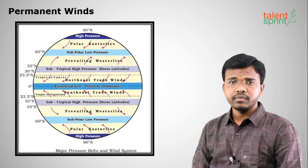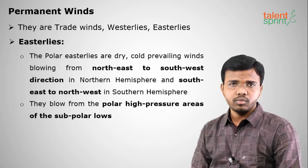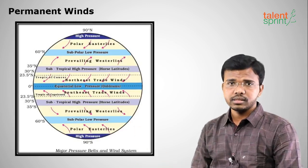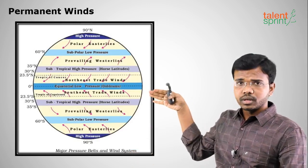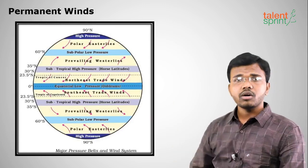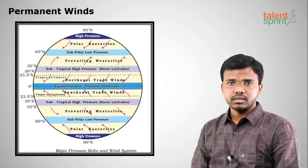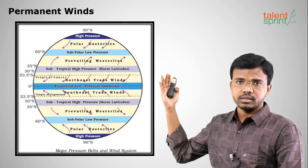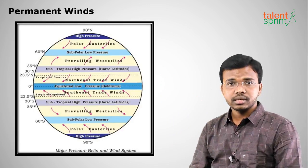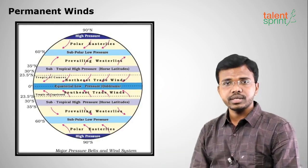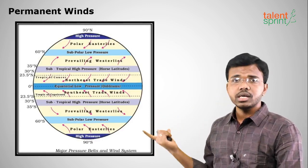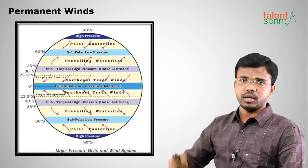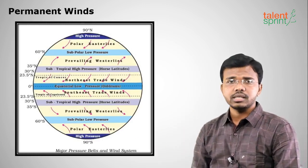Easterlies blow from the eastern side to the western side, after the westerlies zone. They blow from southeast to northwest in the southern direction, and from northeast to southwest in the northern direction — that's why they are called polar easterlies, blowing from the polar regions. The subpolar region is at low pressure and the polar region is at high pressure. Remember: doldrums belt at equatorial low, horse latitudes at subtropical high, subpolar low, and polar high. Trade winds, westerlies, and easterlies blow throughout the year — that's why they are called permanent or planetary winds.